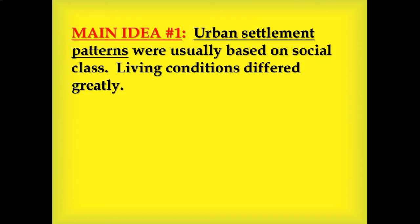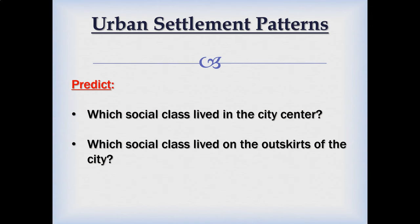We're going to begin by looking at urban settlement patterns and try to figure out who was living where and what those living conditions were like. We're going to make a prediction here. Which social class lived in the city center? And which social class lived on the outskirts of the city?